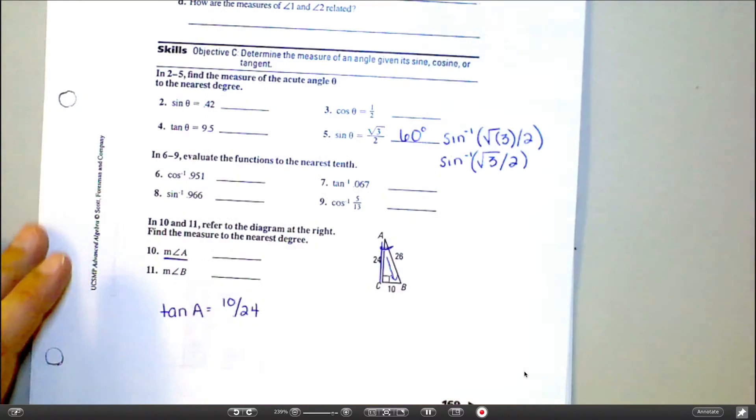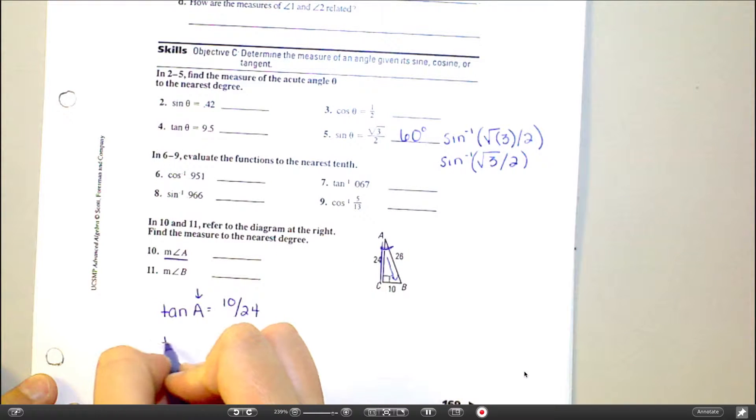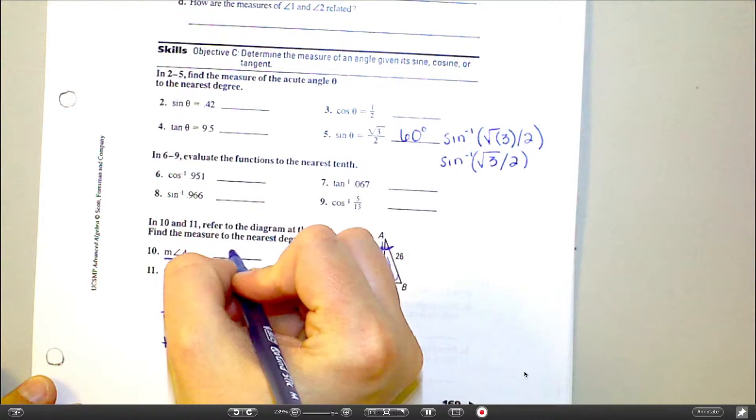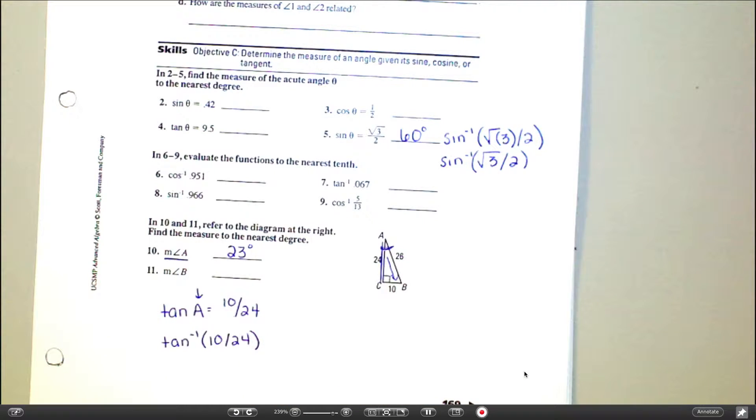But I want to know what the actual angle is equal to, so when I'm looking for this, that's when I'm going to do the negative 1. So tan negative 1 of 10 divided by 24. I don't know what that comes out to be. Say it again, I'm sorry. I got 23. 23, that sounds right. And that would have worked with any one of the trig functions as long as you chose the right two numbers.